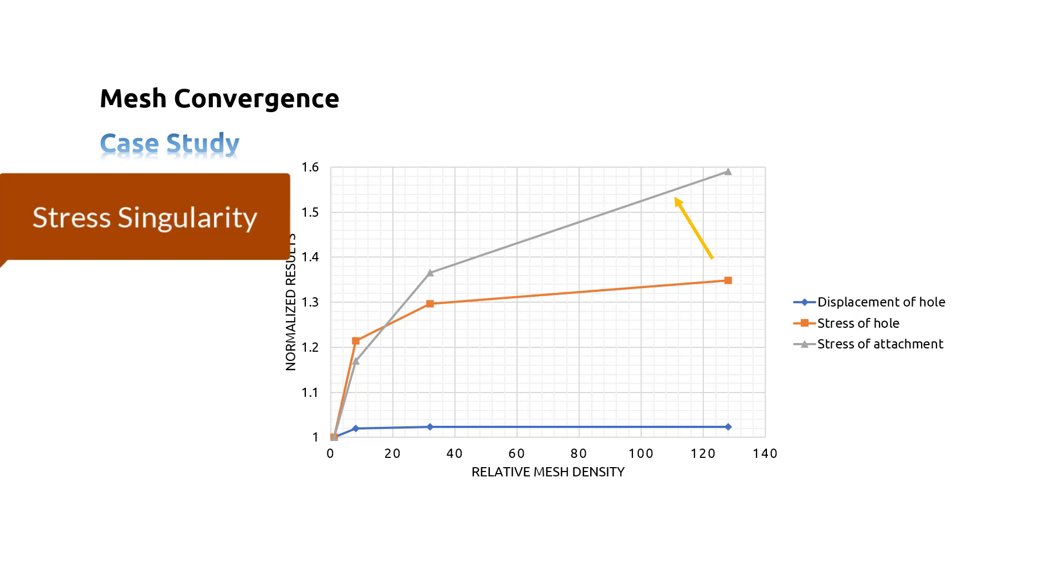A stress singularity exists at the corner of the lug where it attaches to the parent structure. Theoretically, the stress is infinite at this location. Therefore, increasing the mesh density will not produce a converged stress value at this location.